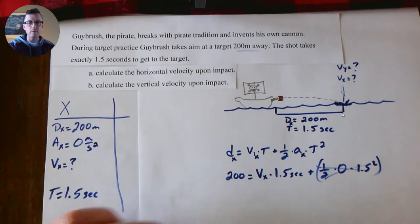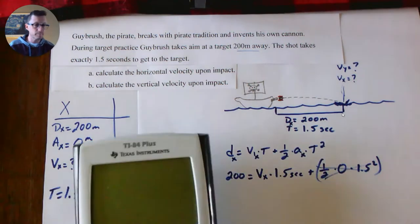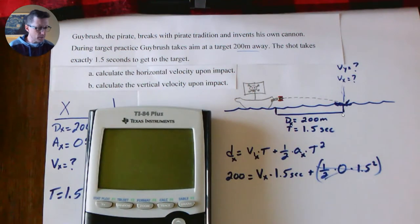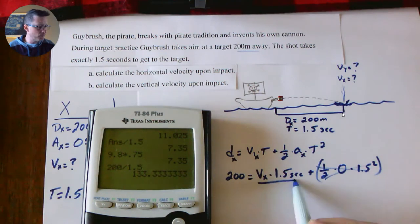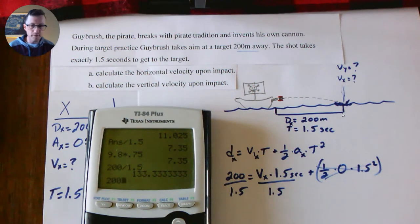Well, having that acceleration of zero is nice because then that whole piece right here cancels out. So then I'm left with 200 equals Vx times 1.5. Well, on my calculator then, I just got to do a little bit of algebra here. I need to divide both sides by 1.5 to get my Vx, so 200 divided by 1.5 equals 133.33—that's meters per second.